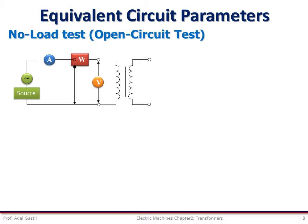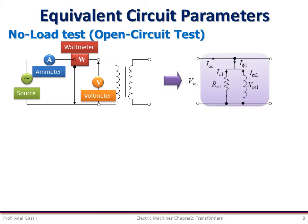During this test, the transformer primary is connected to an AC voltage source at the rated voltage of the transformer, while the secondary winding is left open. We connect one ammeter, one voltmeter, and one wattmeter as shown in the circuit. Under this operating condition, there is no current in the secondary circuit, so we can approximate the equivalent circuit as the shunt branch only.